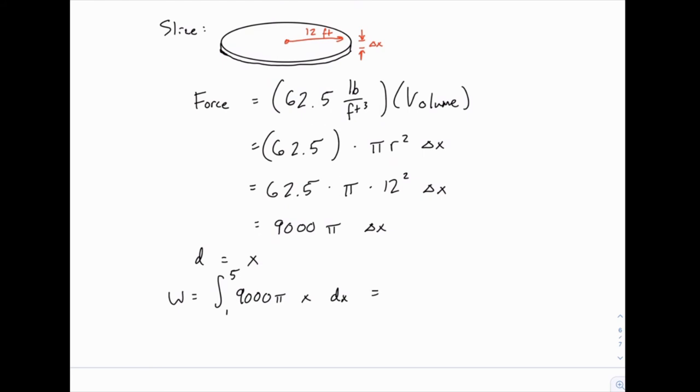Integrating is relatively straightforward. 9,000 pi is just a constant. So when we integrate, we get 4,500 pi times x squared evaluated from 1 to 5. So that would be 4,500 pi times 5 squared minus 1 squared, which works out to 108,000 pi pound feet. Which sounds like a lot of work, and it is because water is pretty heavy and this tank is quite large. So there's our answer for the total work needed to pump the water up over the edge.